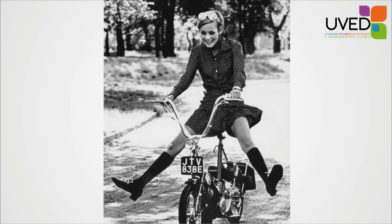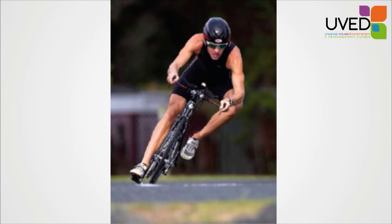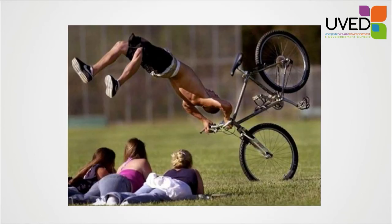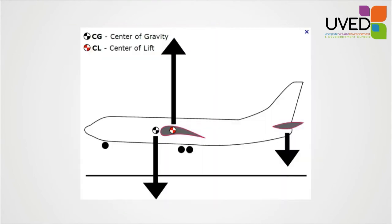A bicycle can only go forward because it can hold balance because it moves. And because it moves forward, we can compensate for the movements that would make it fall right or left — we can calculate the forces going in this or that direction. And if we stop the bicycle, the result is a catastrophic fall.